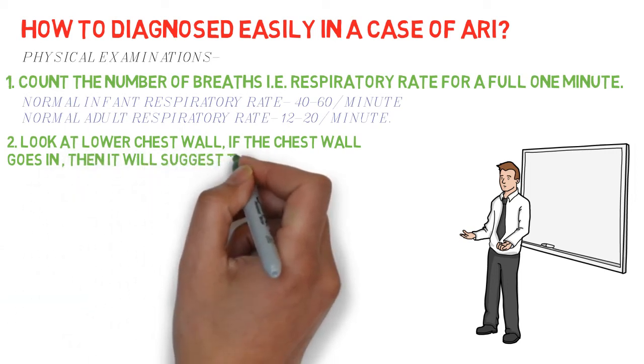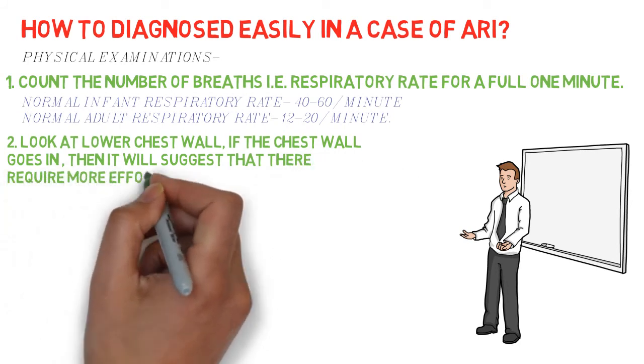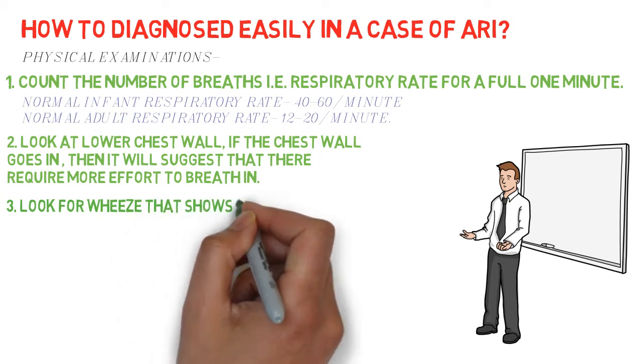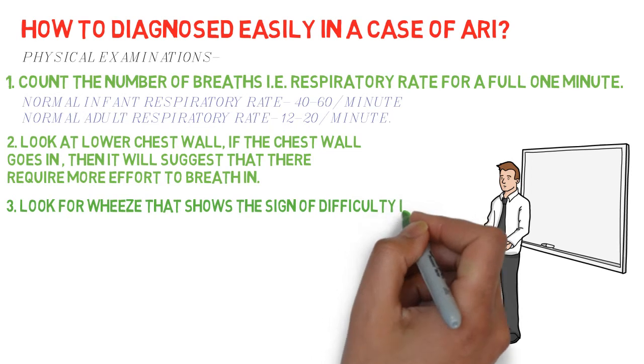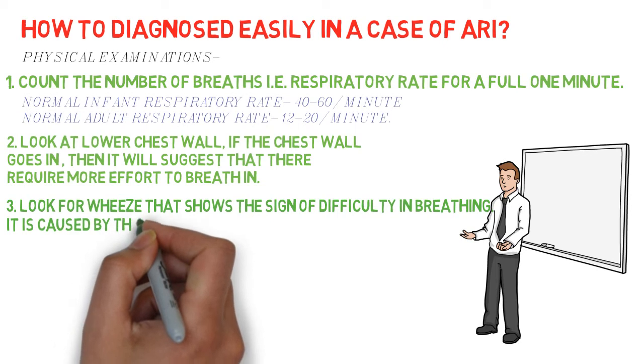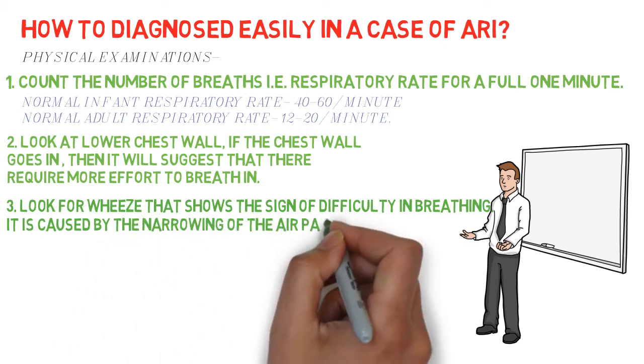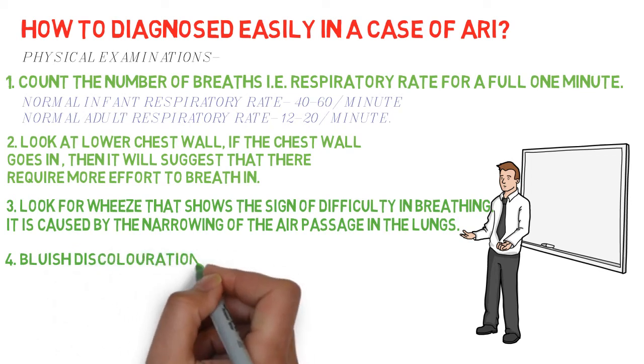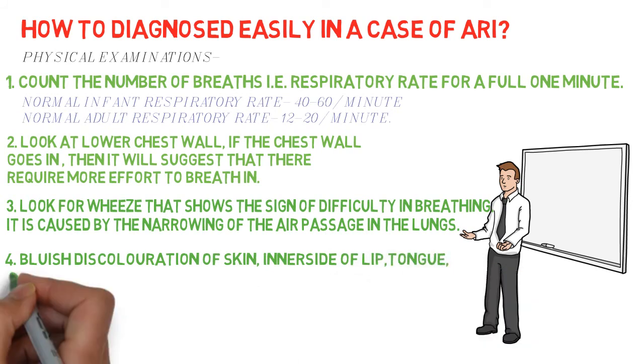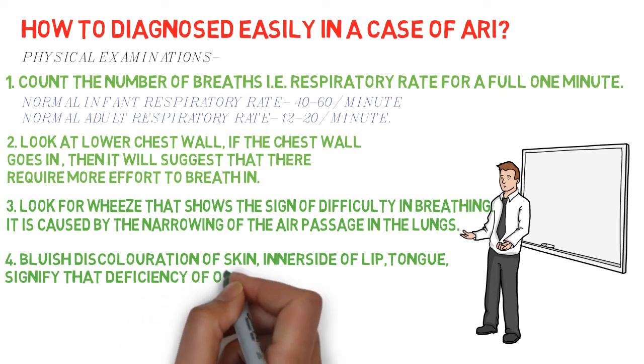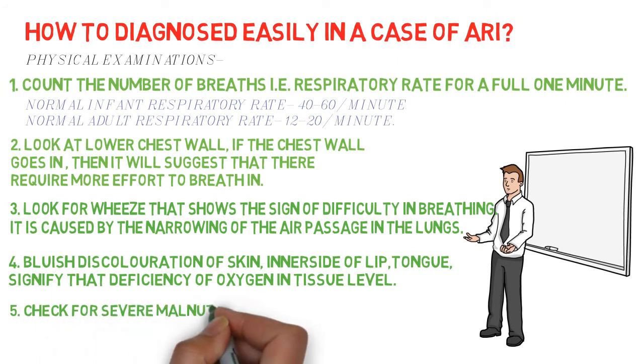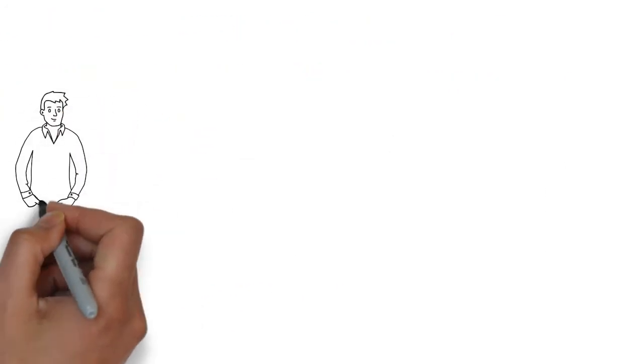Number two, look at lower chest wall. When the child breathes in, if the chest wall goes in, that is chest indrawing occurs, then it will suggest that they require more effort to breathe in. Number three, look for wheeze, which is a soft whistling noise that shows the sign of difficulty in breathing. It is caused by the narrowing of the air passage at the lungs. Number four, bluish discoloration of the inner side of the tongue signifies that there is deficiency of oxygen in tissue level.